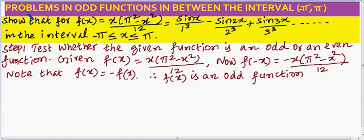We are going to solve problems in odd functions in the interval minus pi to pi. The problem is: f(x) = x(π² - x²)/12 = sin(x)/1³ - sin(2x)/2³ + sin(3x)/3³, in the interval -π ≤ x ≤ π.